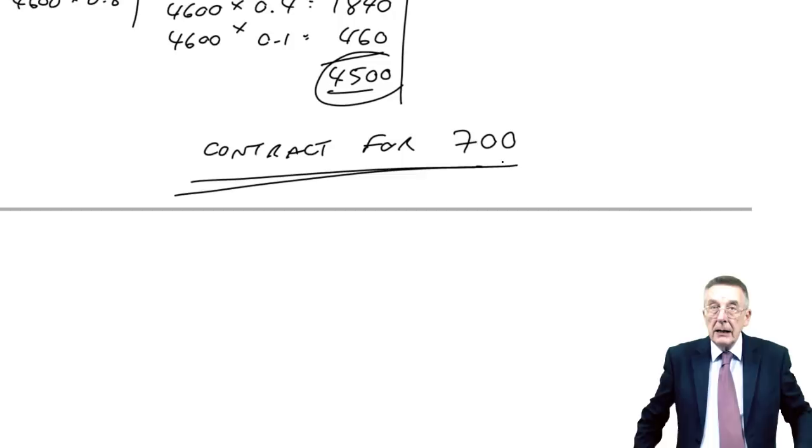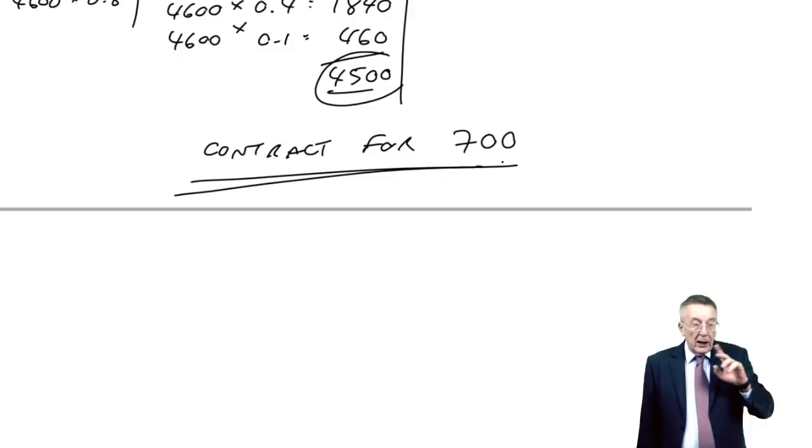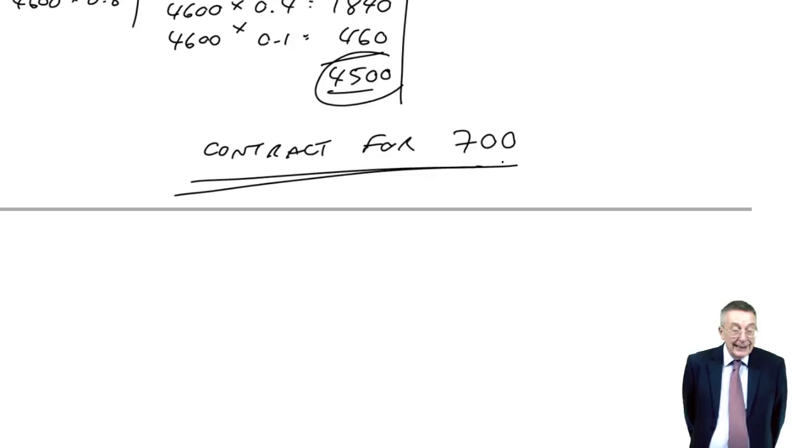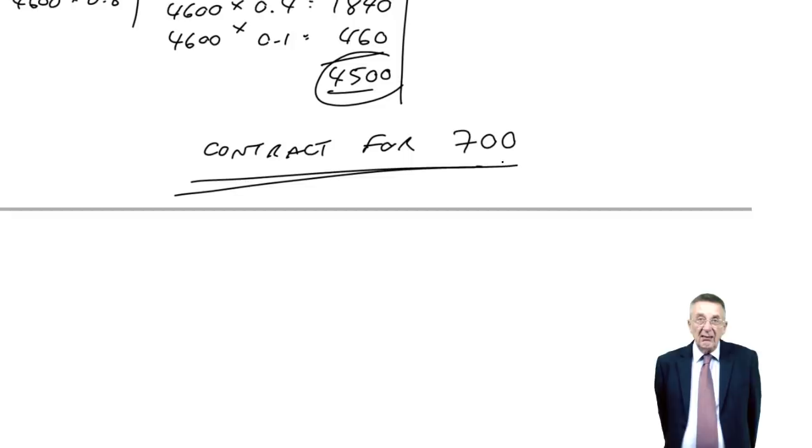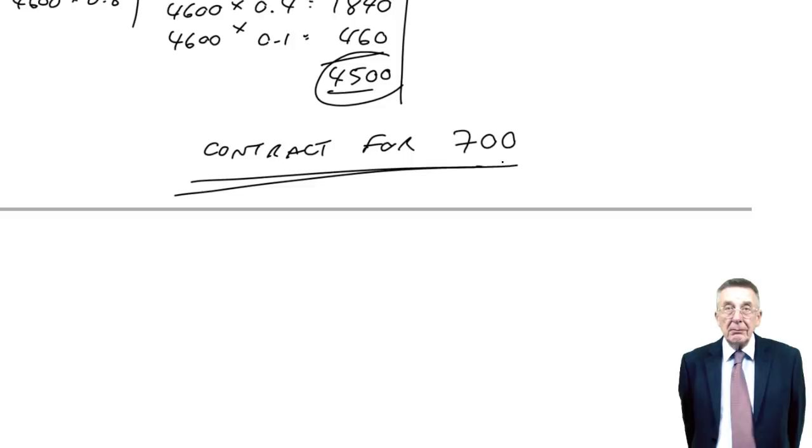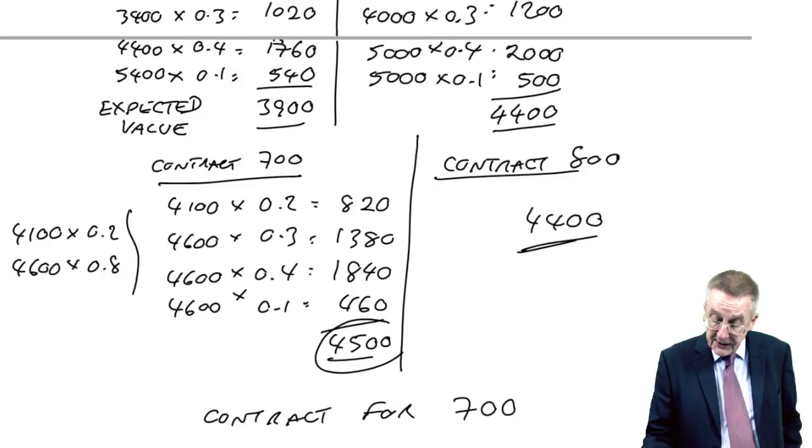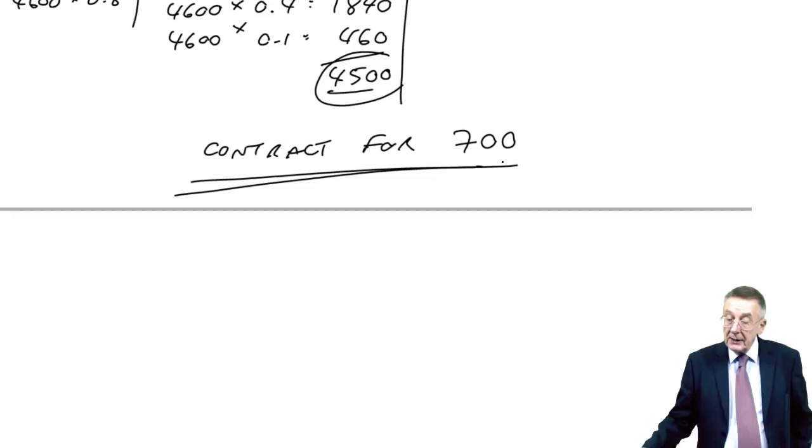Now, before I look at part C, which is something slightly different. Always say the limitations of expected values. Because a lot of people think, oh, why not, we can learn the rules for the others. But surely, expected values is the most sensible. If the average profit a month is 4,500, and that's the highest, then that must be the best. Well, there are two big limitations of expected values.